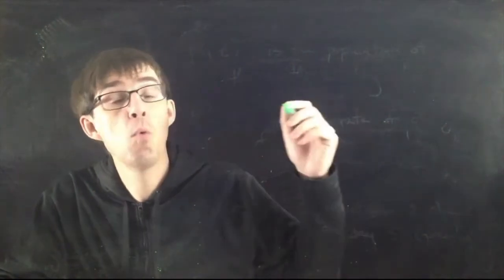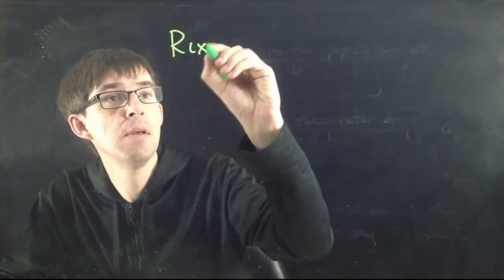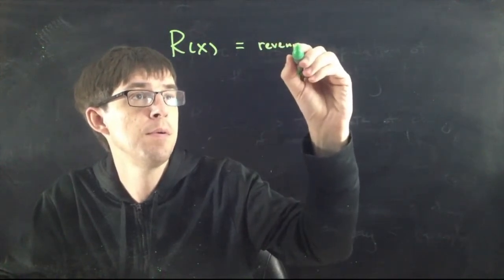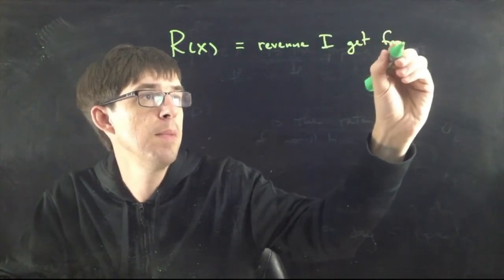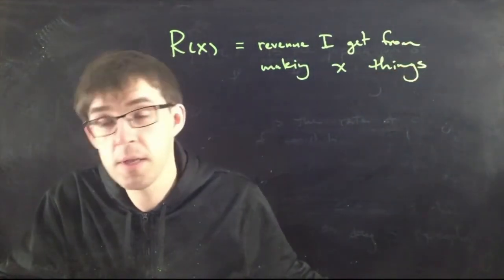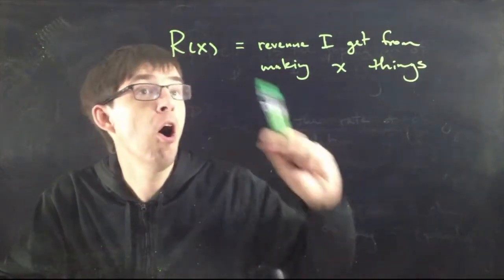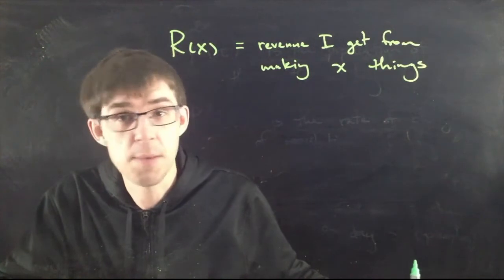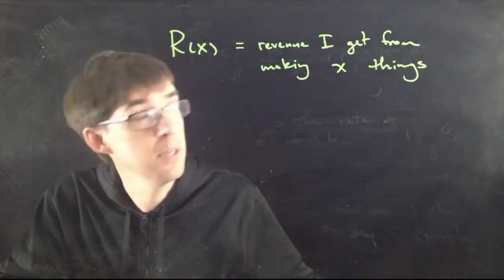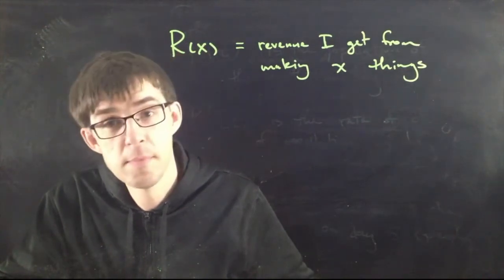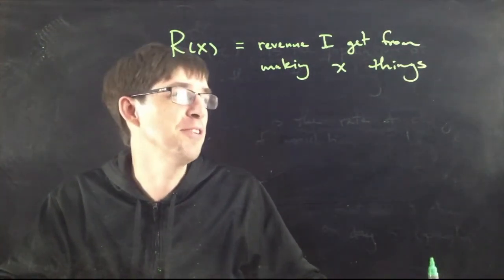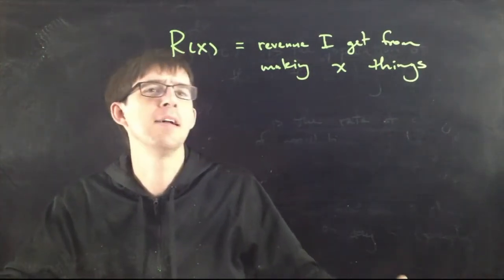Here's another completely different example from the world of business. Let's say I'm making something and R(x), R is for revenue. This is a function which says R(x) is the revenue I get from making, let's say x things. I'm making a bunch of stuff. Let's say I'm making YouTube videos. I'm going to be a YouTube star. R(x) is the revenue that I get from making x things. I make 50 videos, I get a certain amount of money. I make a hundred videos, I get another certain amount of money. That's what this function represents. True story, I actually do make YouTube videos. In the real world, this function is always zero. I don't make any money from my videos on YouTube because they're not popular enough. How is that? I don't know.